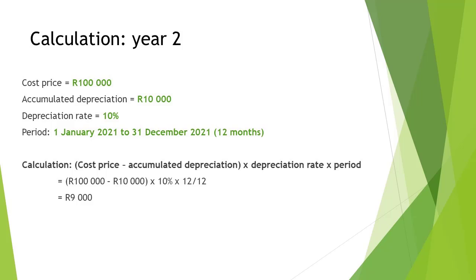In order to calculate the depreciation on the vehicle for the second year, you will need to use the following: the cost price, accumulated depreciation, depreciation rate, and the period. In our example, the cost price is given as R100,000. Since the vehicle was purchased on 1 January 2020 and we are calculating the depreciation for the second year, the accumulated depreciation on this vehicle will now be R10,000. The depreciation rate is given as 10% and the period is 1 January 2021 to 31 December 2021, thus 12 months.